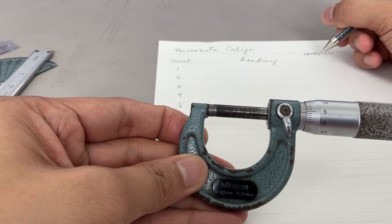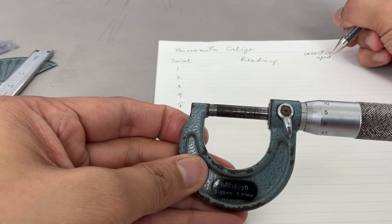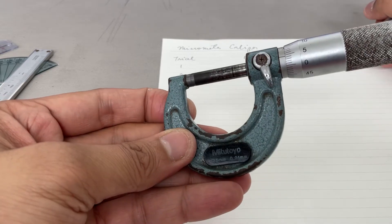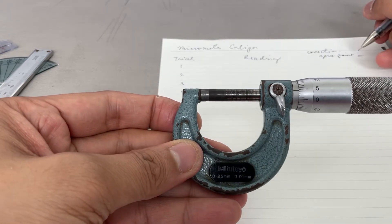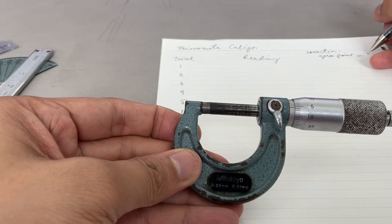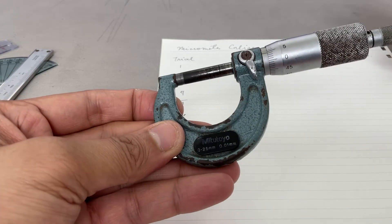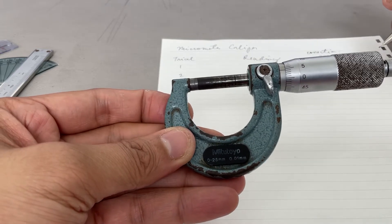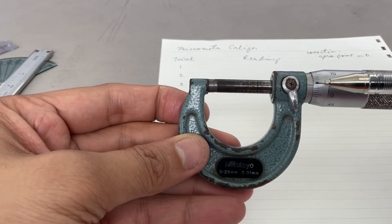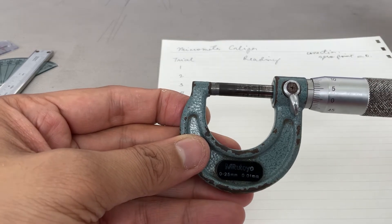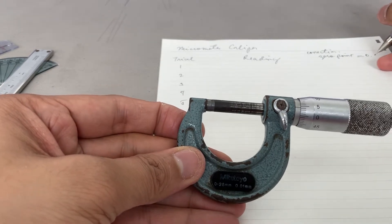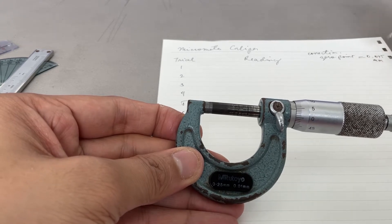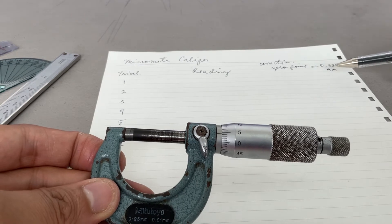The zero correction - the zero point that should supposedly be zero already has a reading of 0.045 millimeter. Every time you measure, you are going to deduct 0.045 millimeter.